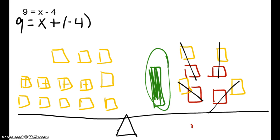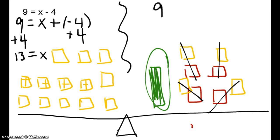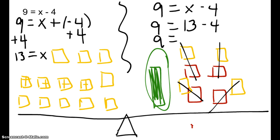So now let's go back algebraically. What did we do? To zero out that negative 4, we added 4. Do you see how we're using inverse operations? So 9 and 4 is 13, and we think x equals 13. Now let's rewrite it: 9 equals x minus 4 becomes 9 equals 13 minus 4. What is 13 minus 4? It's 9. That balances out, so go back and box your final answer.